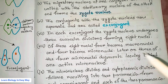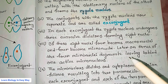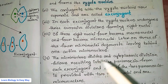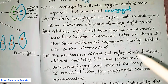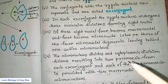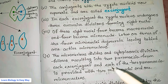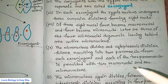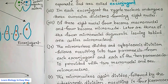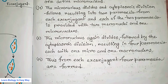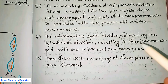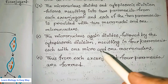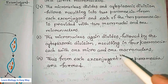Later on, three of the four micronuclei degenerate, leaving behind one active micronucleus. The micronucleus divides and cytoplasmic division follows, resulting in two paramecia from each ex-conjugant, each provided with two macronuclei and one micronucleus.